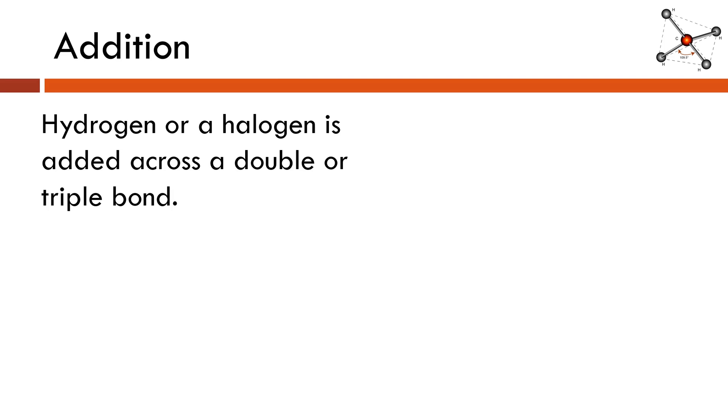And the way you can determine that is by looking at the reactants. In an addition reaction, you have a hydrogen or a halogen, I should say a hydrogen molecule like H2 or a halogen, fluorine, chlorine, bromine, or iodine, remember those are also all diatomic, being added across a double or triple bond. We'll talk a little bit more about exactly what that means, being added across.